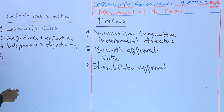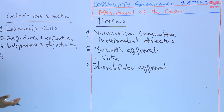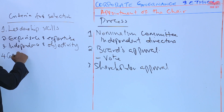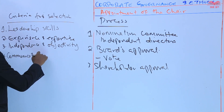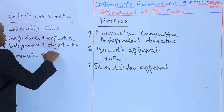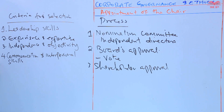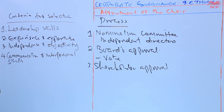Four: the chair should possess communication and interpersonal skills. The chair should be an effective communicator, capable of building relationships with fellow board members, management, and stakeholders.